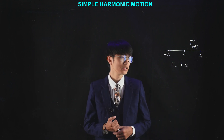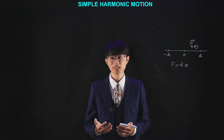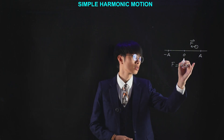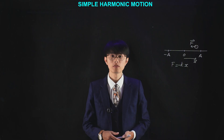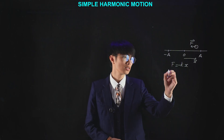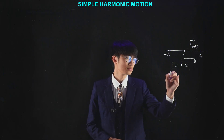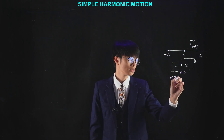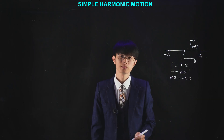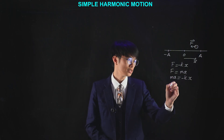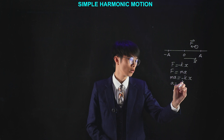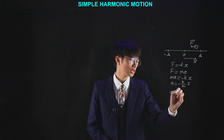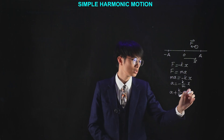But why do we have the minus sign here? That is because the direction of the force is always opposite to the direction of the displacement. According to Newton's second law of motion, force also equals mass times acceleration. So we can rewrite: ma equals minus kx. Dividing through by the mass, we get a equals minus k over m times x, or a plus k over m times x equals zero.